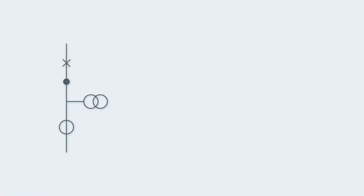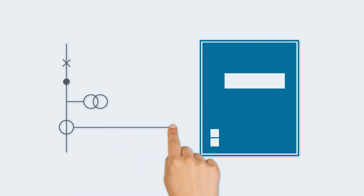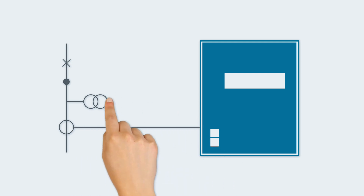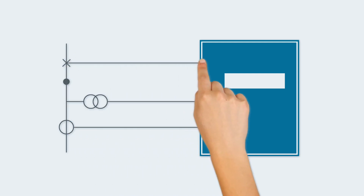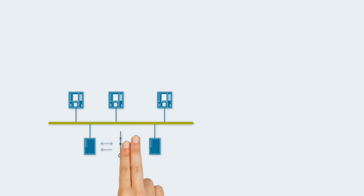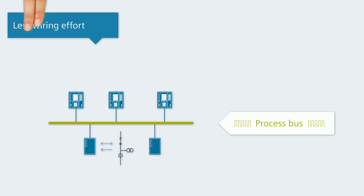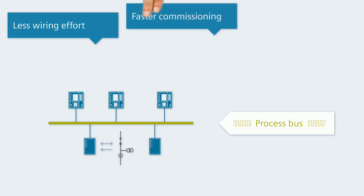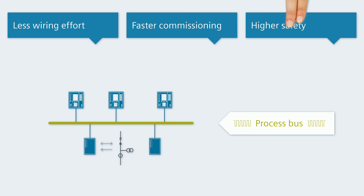Switching devices and instrument transformers are traditionally wired directly to the protection device. Our tip? Break with tradition. With a process bus you achieve the same goal, and that with less wiring effort, faster commissioning and higher safety.